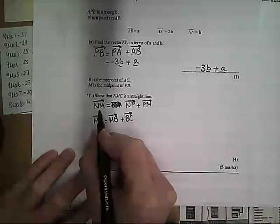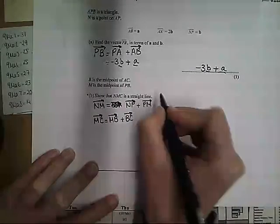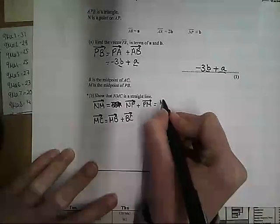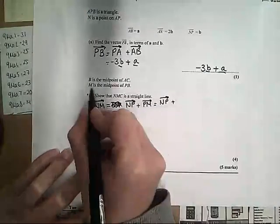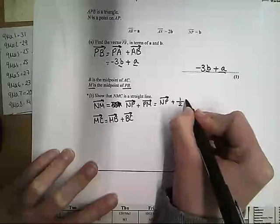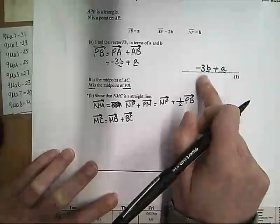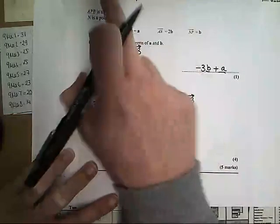So to go from N to M, we're going to go from N to P and then from P to M. In order to do that, I'm going to go from N to P, which is fine because I've got that vector, and then from P to M. Because we know that M is the midpoint of PB, that is half of the vector P to B. And we've done P to B, we did it up here, which is why I'm going in this direction and not the other direction.